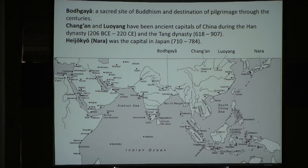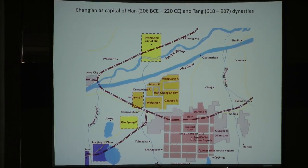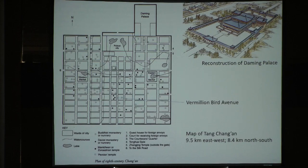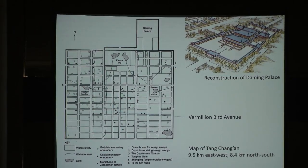For the first segment of today's talk, I will examine the Buddhist transformation of the twin capitals, Chang'an and Luoyang. To the southeast of Han Chang'an, planning for a grand, formally planned city began during the Sui Dynasty that preceded the Tang. When the Tang took power in 618, it completed the building of the city and renamed it Chang'an, City of Everlasting Peace, which was to become the great metropolis of a united empire.